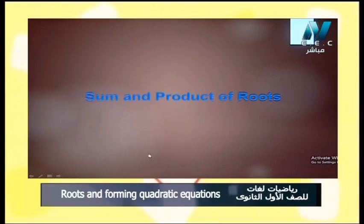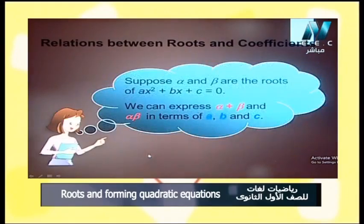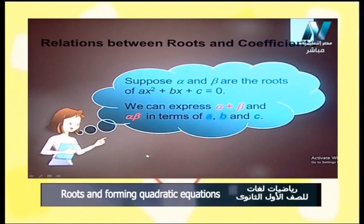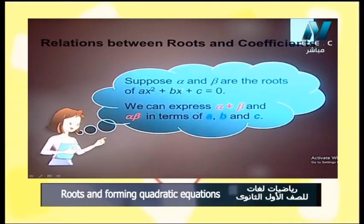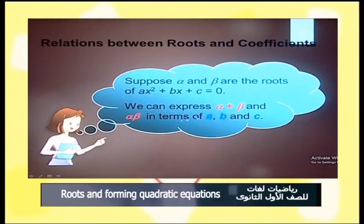Sum and product of roots — relations between roots and coefficients. Suppose alpha and beta are the two roots of the equation ax² plus bx plus c equals 0. We can express the sum alpha plus beta and the product alpha·beta in terms of a, b, and c.